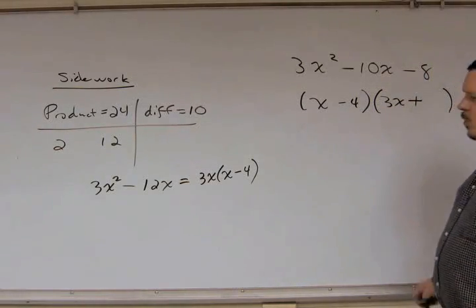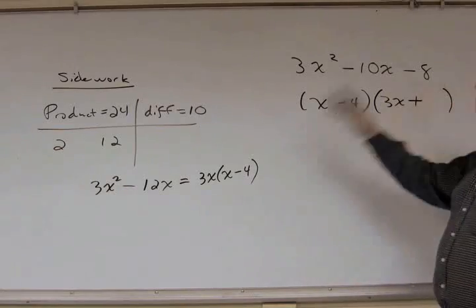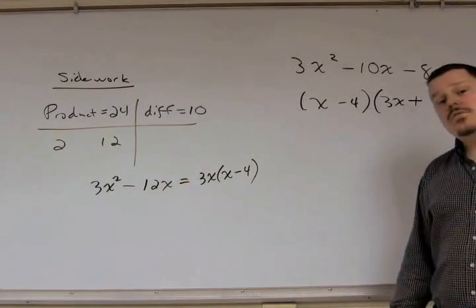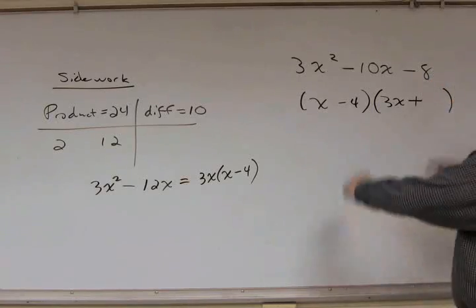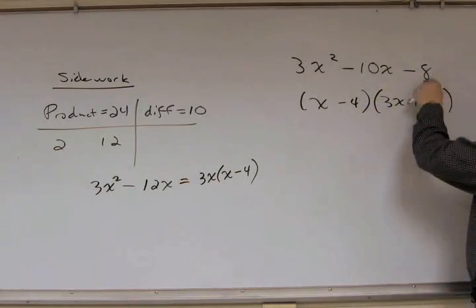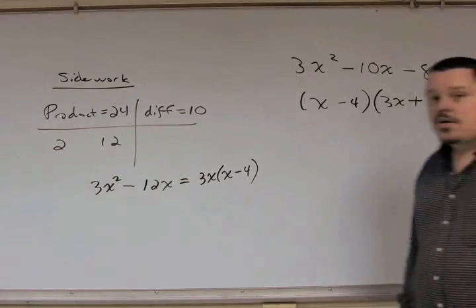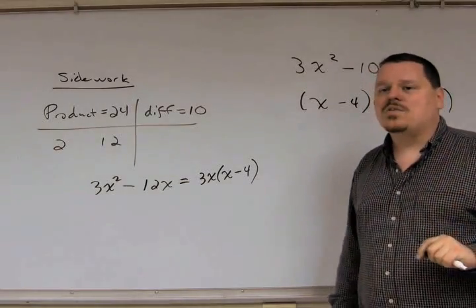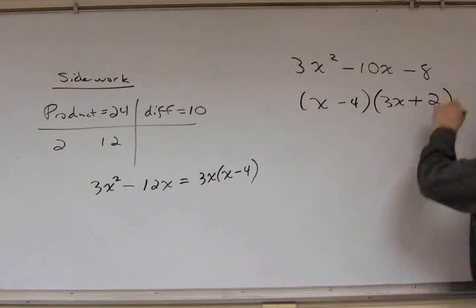Well, if you were to FOIL this out, forget about the F, the firsts, the O, which is the outers. Forget about the inners. Focus on the last terms. These two, when you multiply them together, 4 times whatever this is needs to give you 8. So, what number times 4 gives you 8? Or, better yet, 8 divided by 4 is what? And that will be 2.